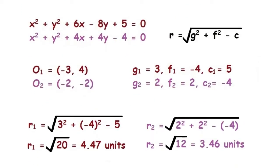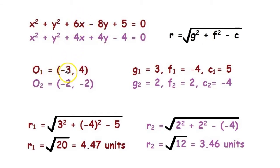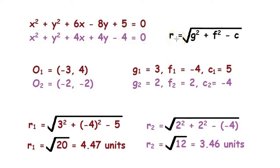Now let's take an example. We are given two circles: x² + y² + 6x − 8y + 5 = 0 and x² + y² + 4x + 4y − 4 = 0. First, we need to find the coordinates of the centers of both circles. So O1 will be (−6/2, 8/2) which gives us (−3, 4). O2 will be (−4/2, −4/2) which gives us (−2, −2). Next, we need to find the radius of both circles.